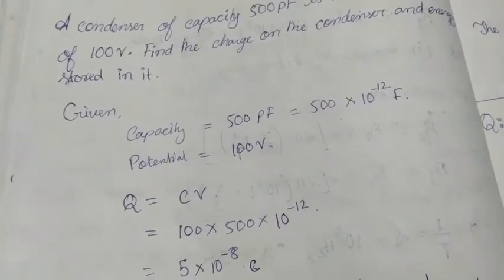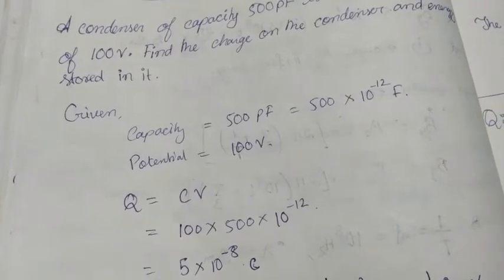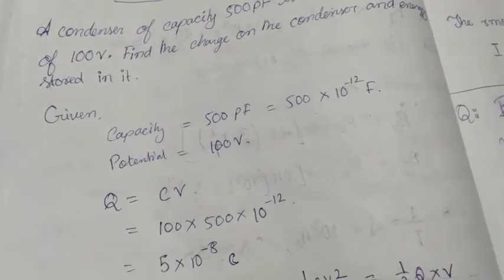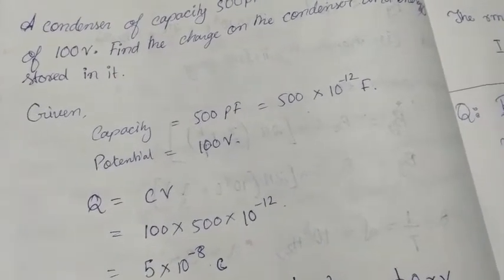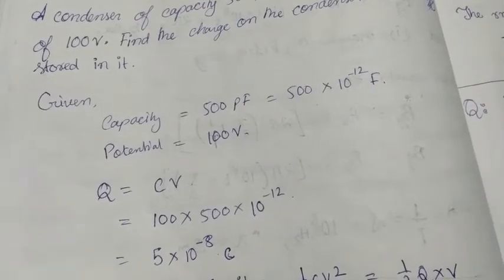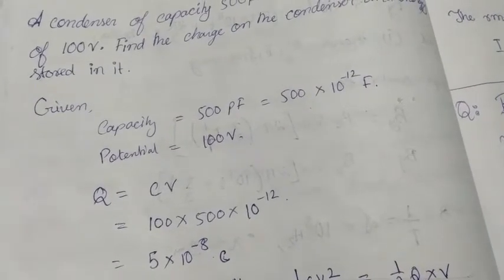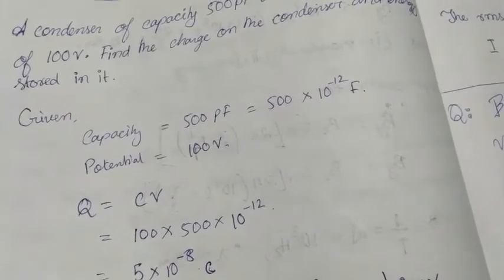So the charge on the condenser will be Q is equal to C into V. The charge on the condenser will be C into V. The value is 500 into 10 to the power minus 12 F multiplied with V volt, the potential is 100 V.